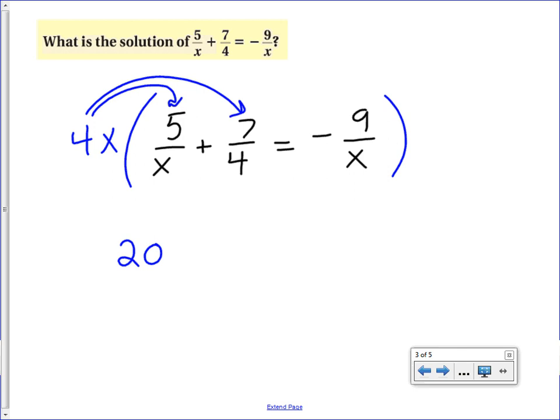When you do 4x times 7, because there's a 4 on the bottom, the 4's will cancel, and all we'll be left with is 7x. And then we do 4x times negative 9, because there's already an x on the bottom, the x's will cancel, and this will equal negative 36. Now we have no denominators, and we solve this equation like normal.